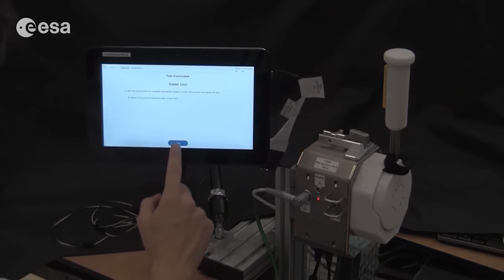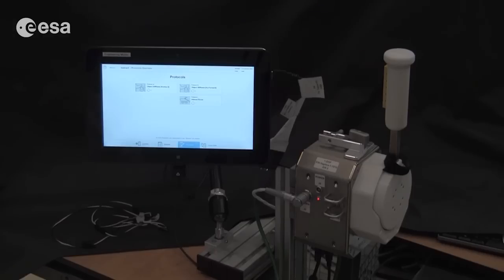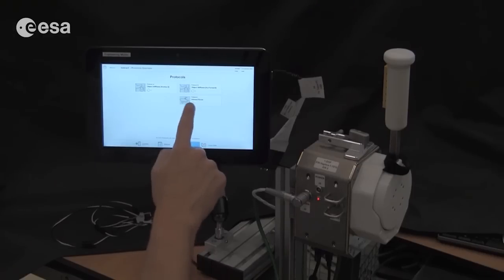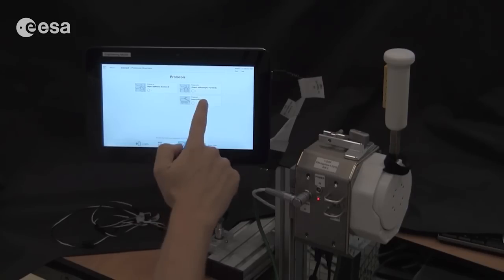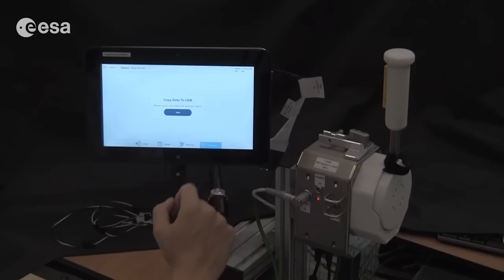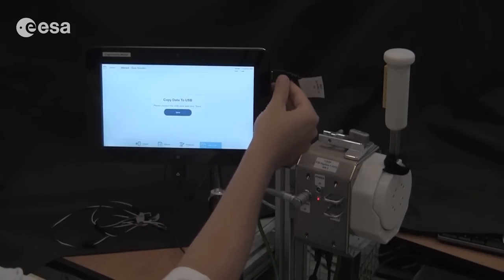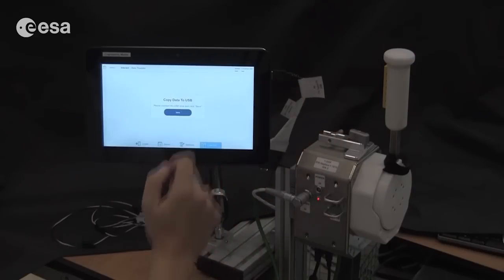This concludes the run on protocol 2 of INTERACT. You see that the trial number has incremented here, which means that the experiment was successful. Now you can go ahead and copy the data by pressing the copy data button and exchanging the USB connector with the data link to a USB drive and press save.